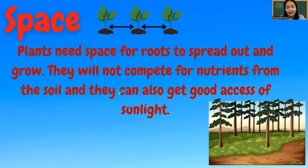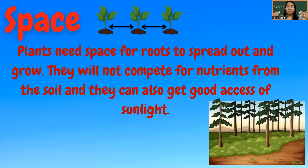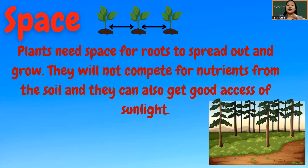Next, we have space. Plants need space for roots to spread out and grow. They will not compete for nutrients from the soil, and they can also get good access to sunlight. That's why farmers and gardeners make sure that their plants and crops have proper spacing before they plant them. For example, when a farmer plants corn, they make sure the distance between each seed is proper, so the roots can spread out and not compete for nutrients.